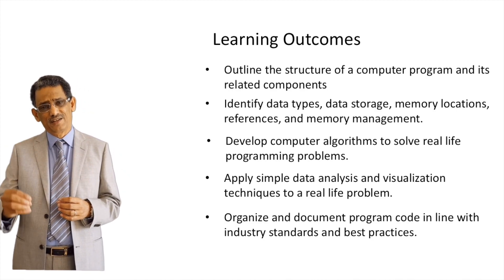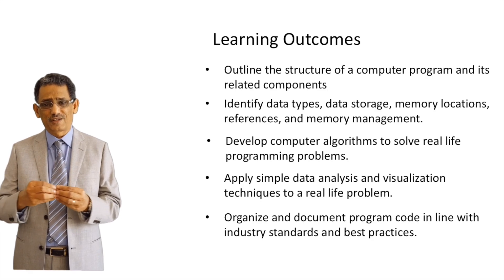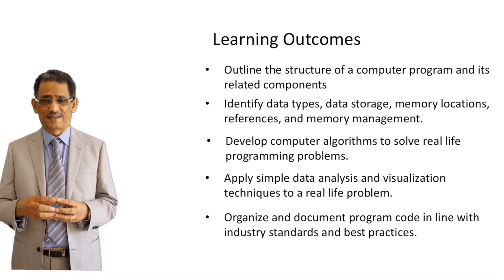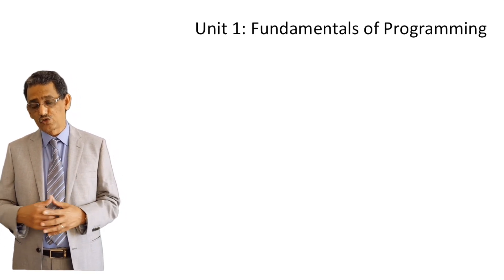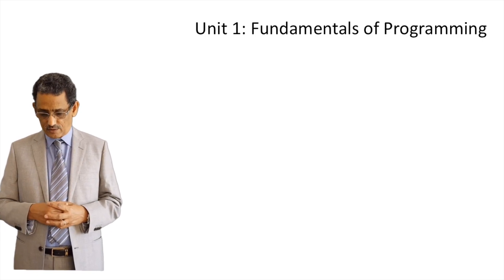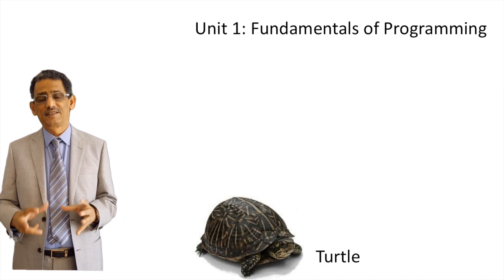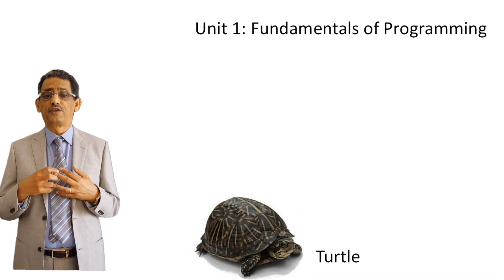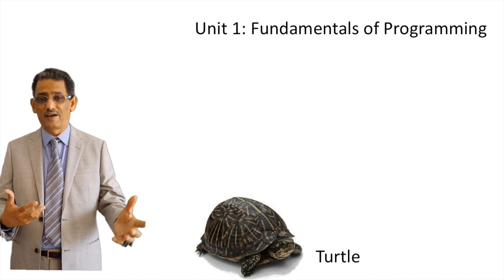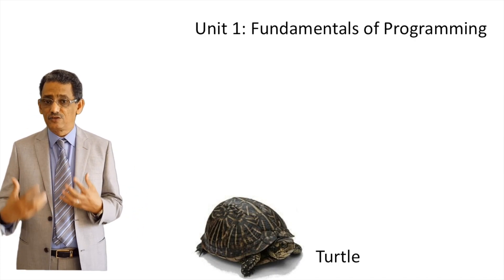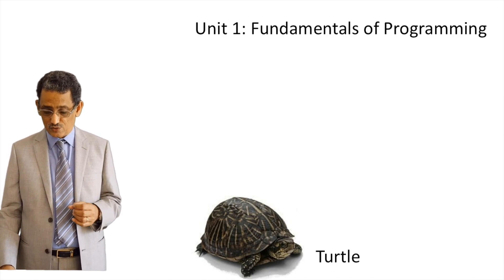So these are the five learning outcomes: you learn program structure, data types, algorithm creation, and then put those skills together to solve data analysis problems. There are three units in the course. The first is the fundamentals. We'll use a package called Turtle — a visual, graphical way of learning programming. You'll draw shapes like a house, a car, and other things, and through that drawing you learn the fundamentals of programming, including structure and data types.